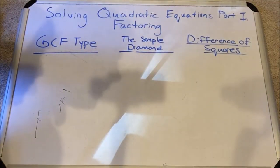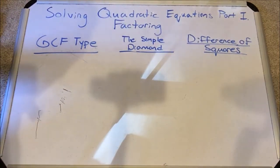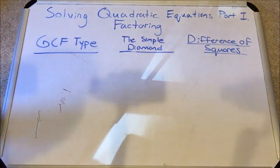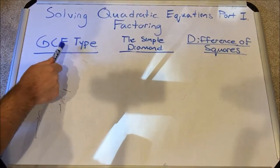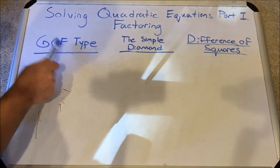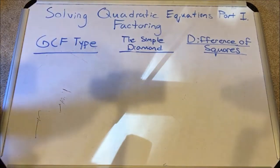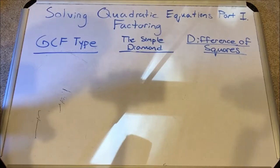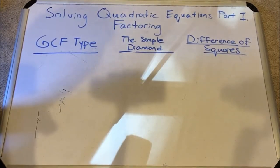Hello everyone and welcome to TutorTerrific. Today in this video I'm going to start a three part series on solving quadratic equations. This first part covers the basic factoring methods you can use to solve quadratic equations. I'm going to go over three types: greatest common factor (GCF) type factoring, the simple diamond method used for trinomials, and the difference of squares.